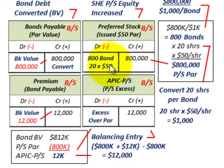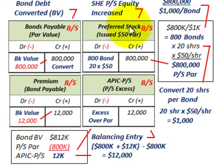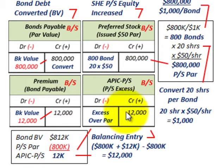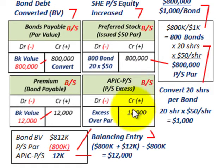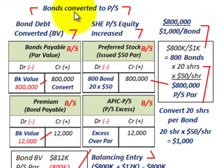We've gone through a basic example using simple arithmetic to determine the conversion. When you remove your bond debt, you do it at its book value and move it over into shareholders' equity on the balance sheet. Everything sits on the balance sheet — it's just a matter of moving debt over to equity. The additional paid-in capital increased based on the premium in bonds payable as a balancing entry.